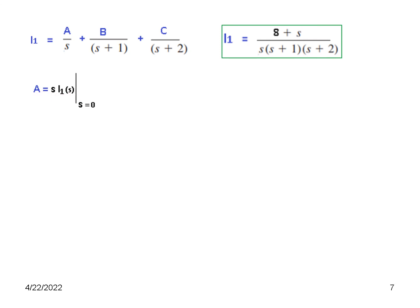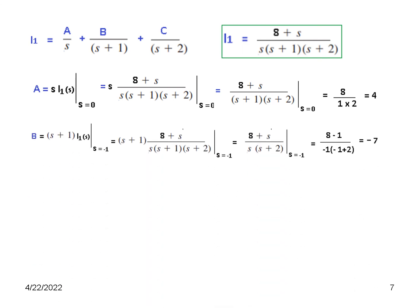So we will use now this technique to find A. S into I_1(S). S into this value of I_1 we will use here. So S gets cancelled. It is 8S divided by (S + 1)(S + 2), value is S = 0. We get A equal to 4. Multiply by the denominator (S + 1), this is equal to -7 from here, and this gives -7.